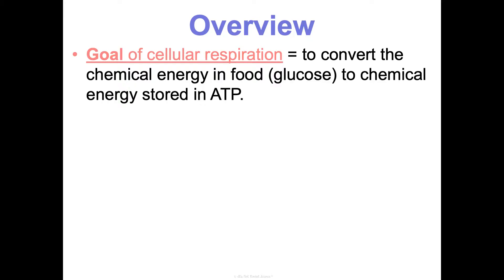The ultimate source of energy on Earth is the sun. We can't access that as consumers, so plants, which have chloroplasts with chlorophyll, are able to absorb sunlight and convert and store that light energy into chemical energy as glucose. Consumers can eat plants or other animals that have eaten plants to access glucose or other carbs and lipids in the foods that we eat. We need to break down and convert that energy and glucose into a usable form called ATP.